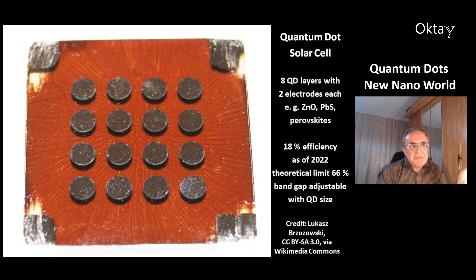That's the quantum dot solar cell. Here in this picture you can see sixteen electrodes. This solar cell contains eight quantum dot layers. Each is connected with two electrodes. For quantum dots you can use the material zinc oxide, lead sulfide and perovskites. In 2022 the maximum efficiency was 18%. But the theoretical limit is at 66%. And again you can adjust the band gap by controlling the size of the quantum dots.